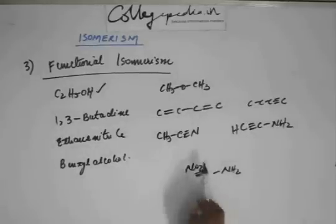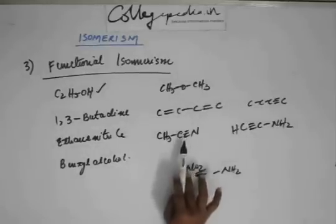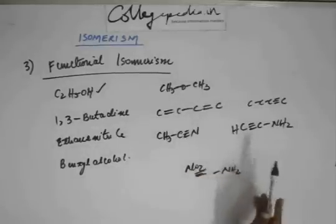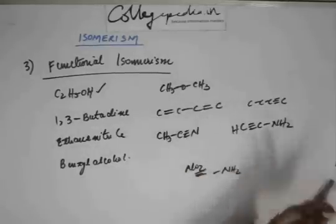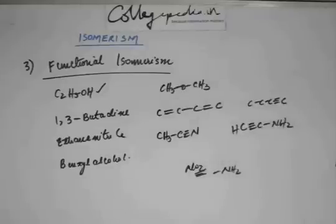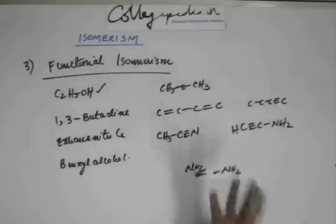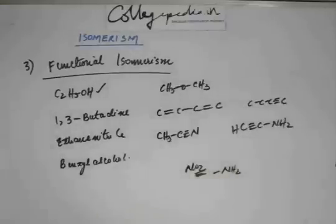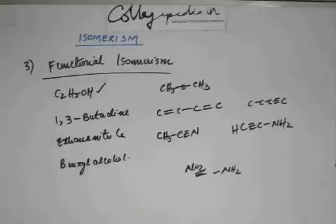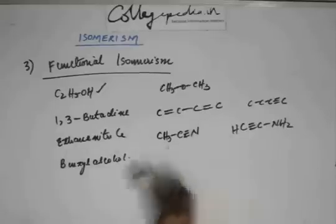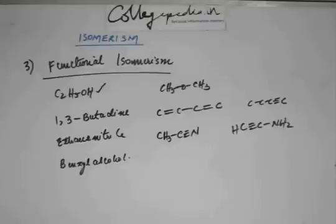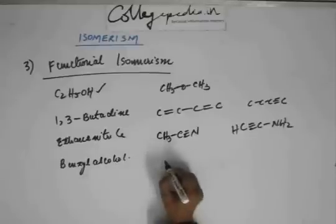The degree of unsaturation remains the same, with a triple bond, and you have a different functional group. So this is the functional isomer of ethane nitrile. Benzyl alcohol — the benzyl group is this group.